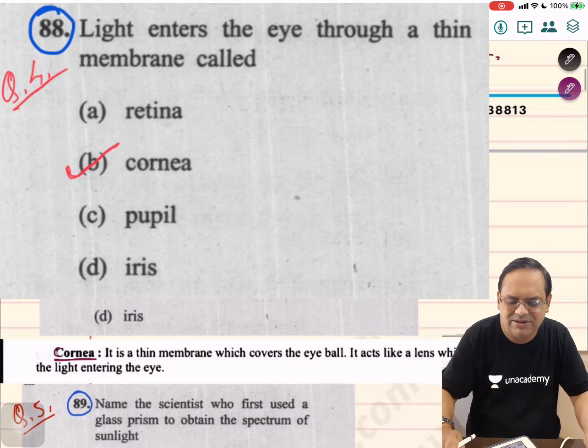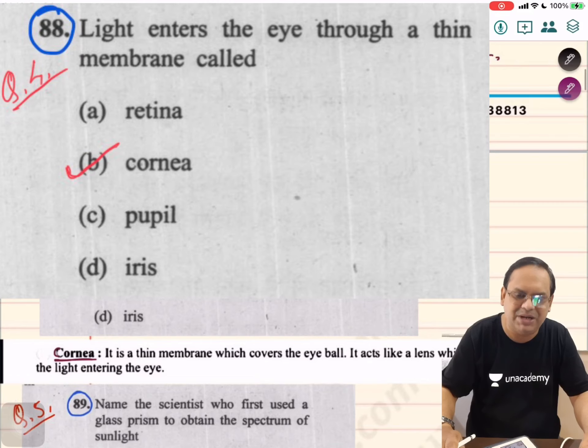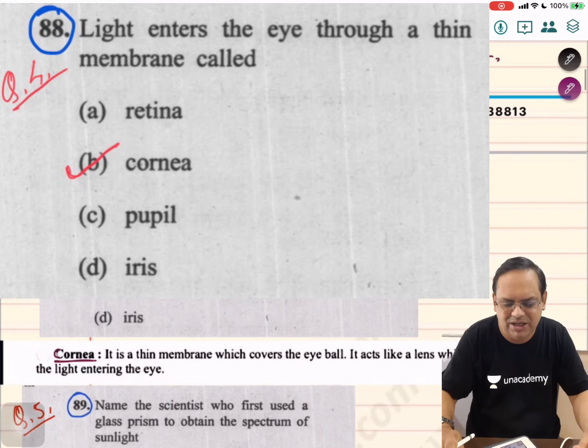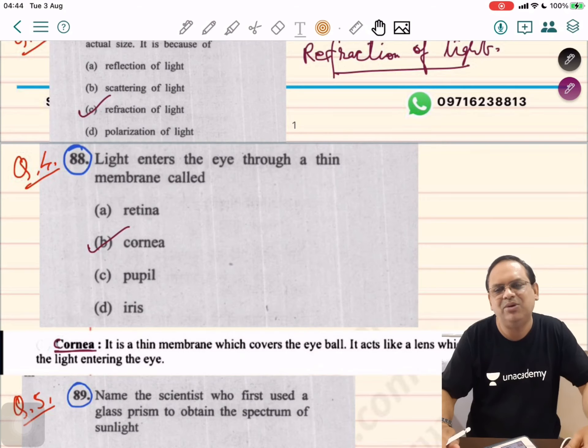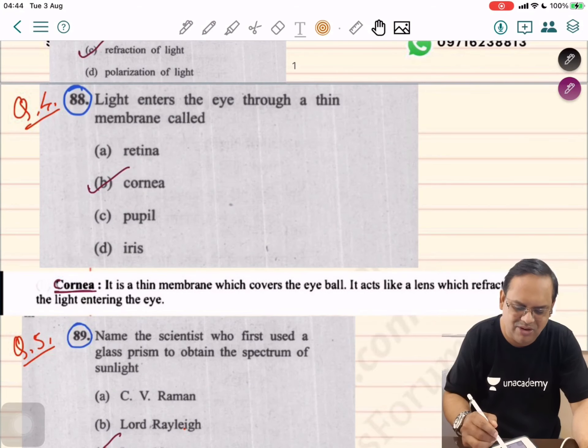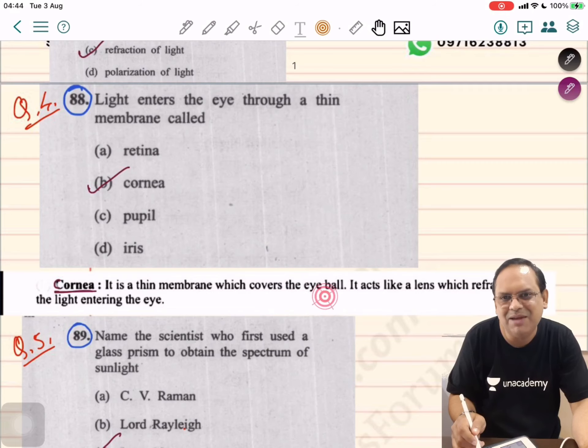Light enters the eye through a thin membrane called: cornea, retina, pupil, or iris. I may say cornea is the right answer. In human eye discussion, cornea is a thin membrane which covers the eyeball. It acts like a lens which refracts the light entering the eye.